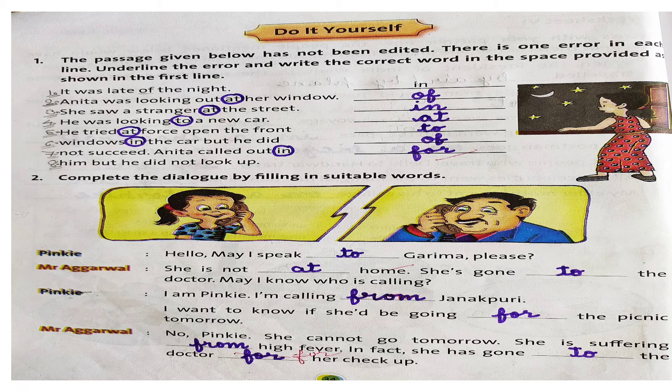He tried at force — at galat hai, toh at ki jaga we will use to. And last — windows in the car: windows car ke andar thodi na hai, windows toh car ki hai, toh windows of the car. But he did not succeed. Anita called out in him — called out for him, usne usse pukara, toh for him, but he did not look up. So this is the first question.